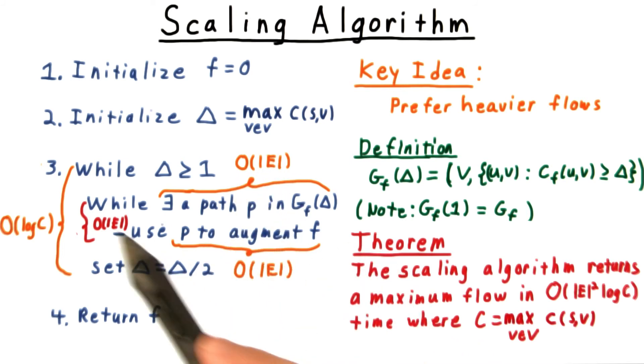For a total of E squared log C as we state in this theorem. The scaling algorithm returns a maximum flow in time order E squared log C where C is the maximum capacity of an edge coming out of the source.